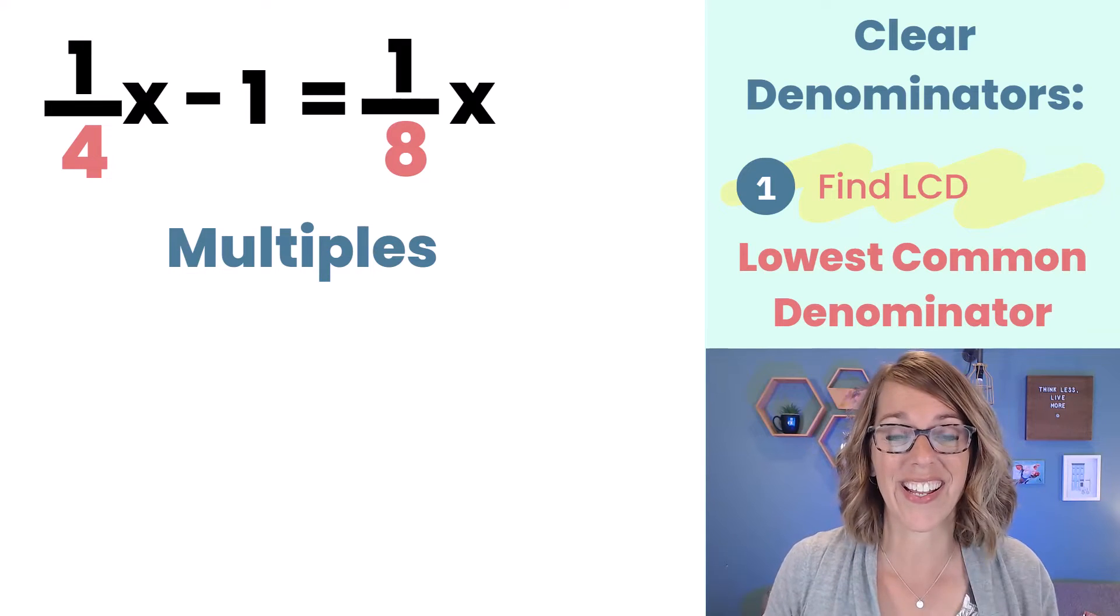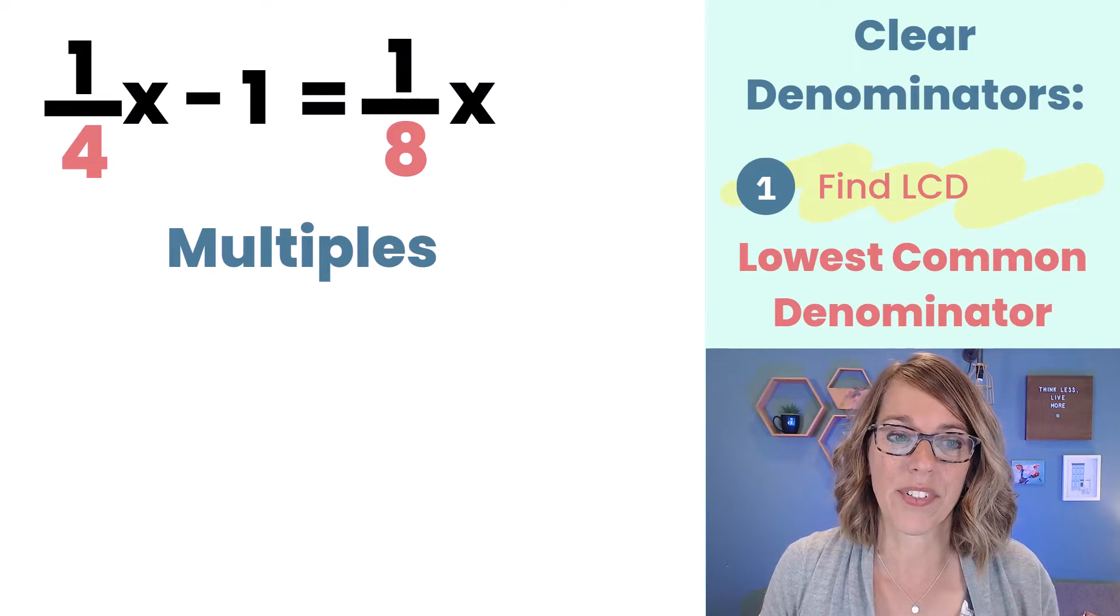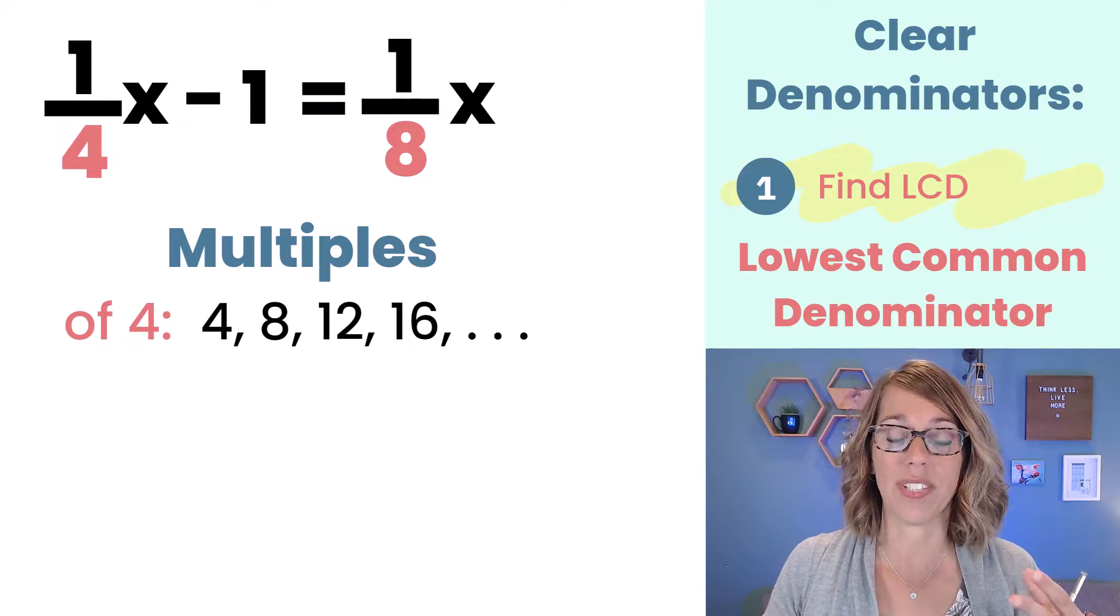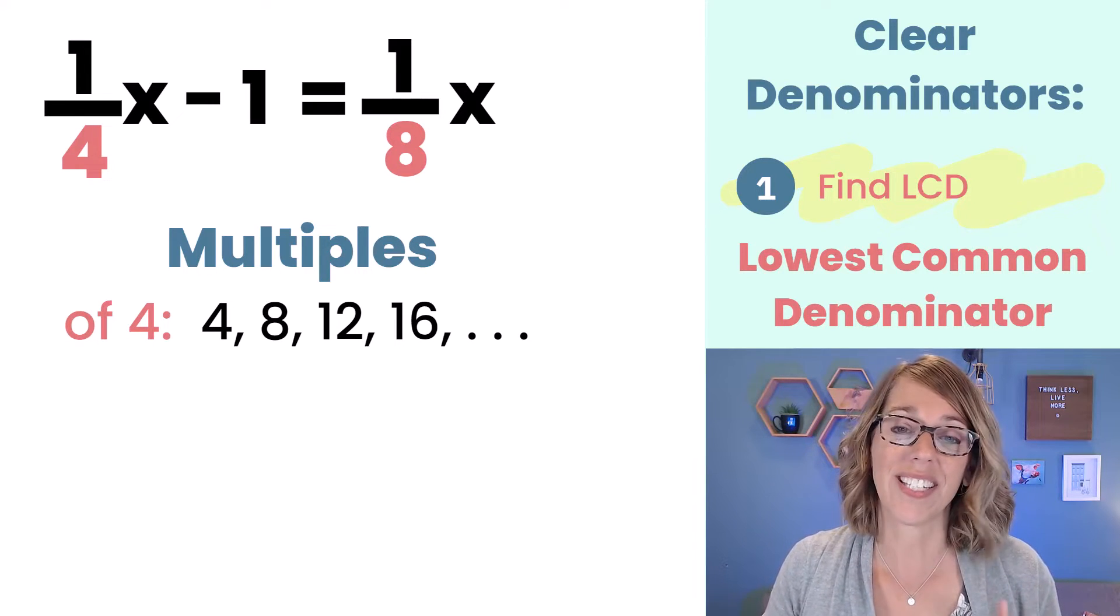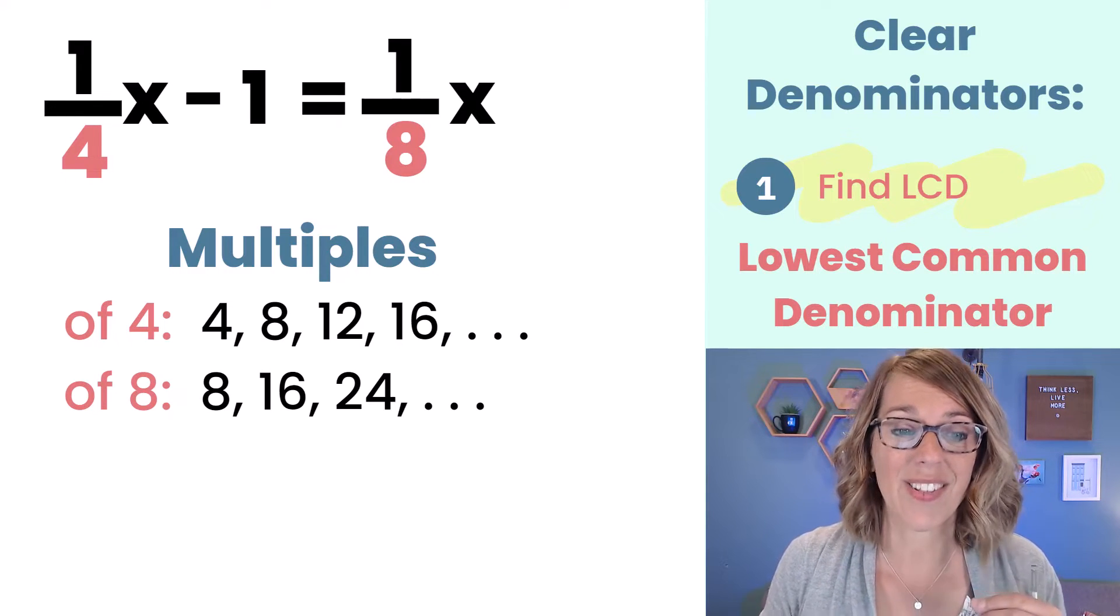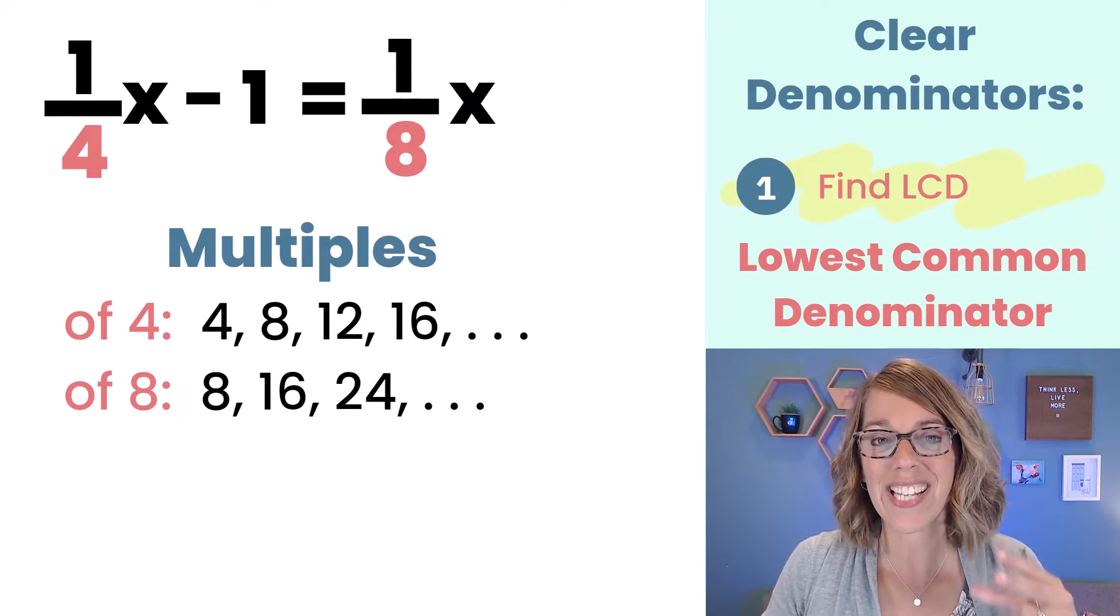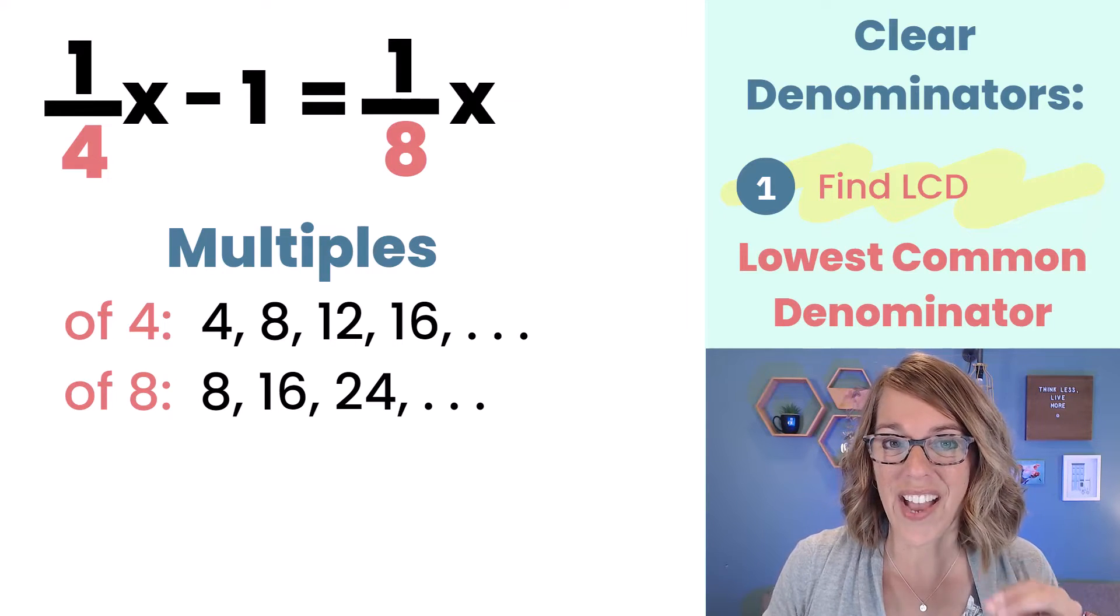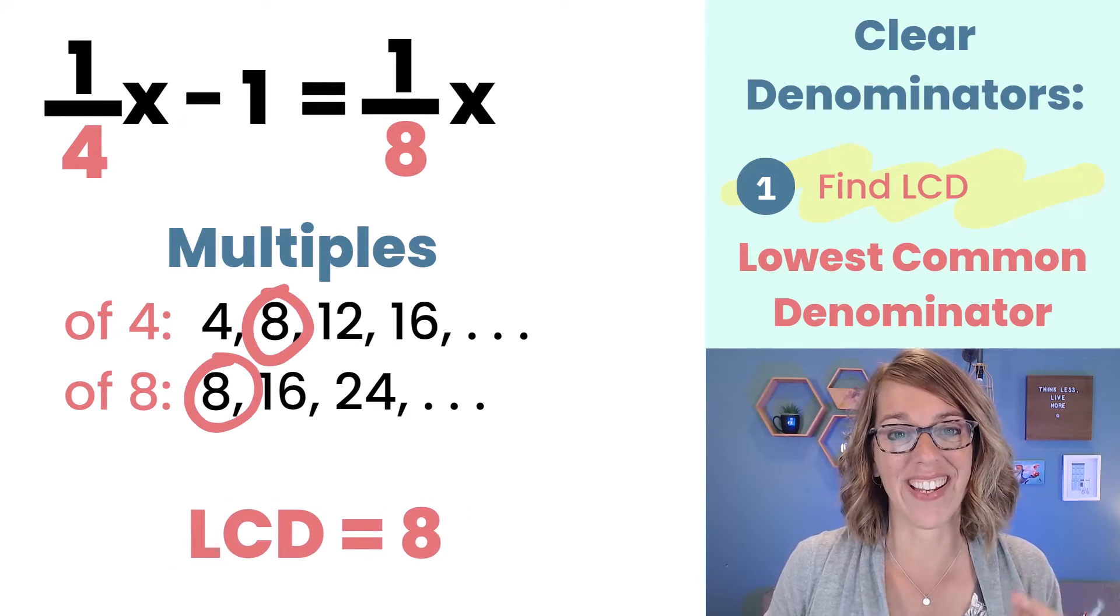If you're listing the multiples you're going to count by fours. Four times one is four, four times two is eight, then we've got twelve, sixteen, and so on. And then we're also going to find multiples of eight. So that would be eight times one is eight, eight times two is sixteen, and so on. Well we already have the one in common and that is the eight.